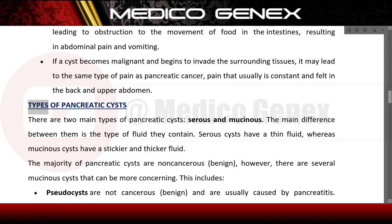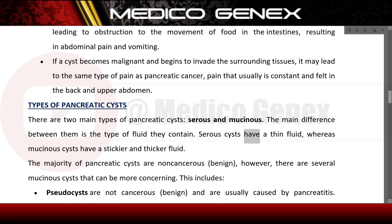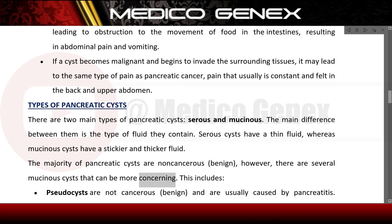There are two main types of pancreatic cysts: serous and mucinous. The main difference is the type of fluid they contain — serous cysts have thin fluid, whereas mucinous cysts have a stickier and thicker fluid. The majority of pancreatic cysts are non-cancerous, but several mucinous cysts can be more concerning.